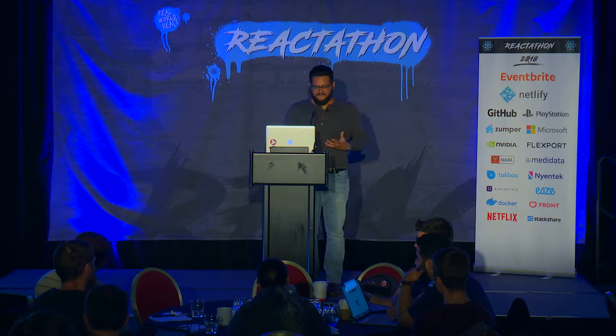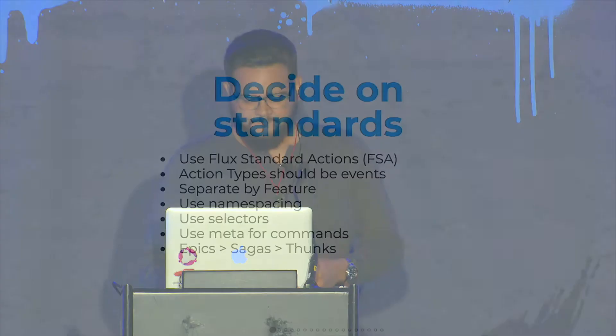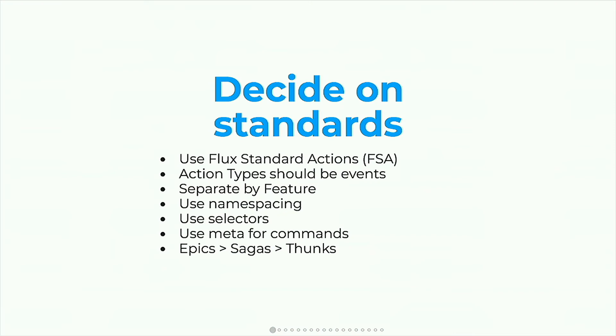Use namespacing when it comes to actions, so we can keep the actual event name simple and namespace those things to different parts of our app. Use selectors — selectors are really important because they can keep your state organized in a single place, and the rest of the app can interact with that state without having to worry about its shape. We can also talk about the meta field for commands. Sometimes it's unavoidable to use commands, but we can keep action types as events and still use commands — and I'll show you how.